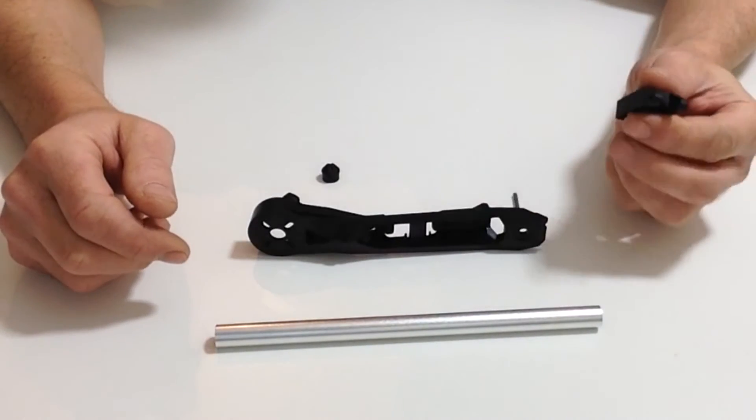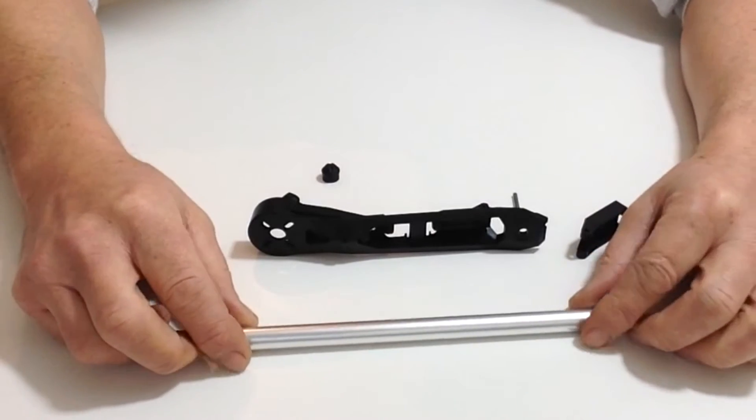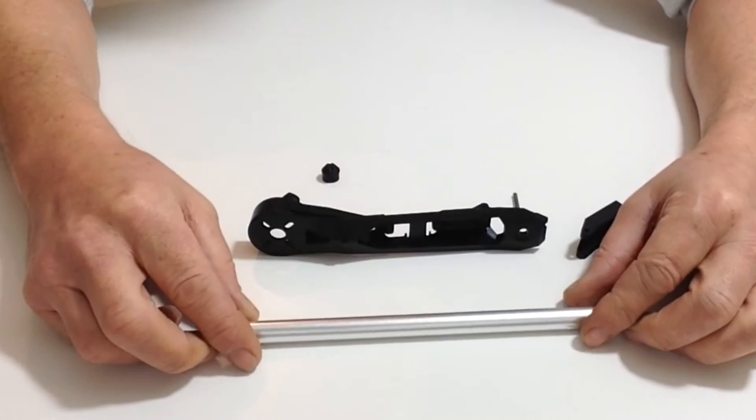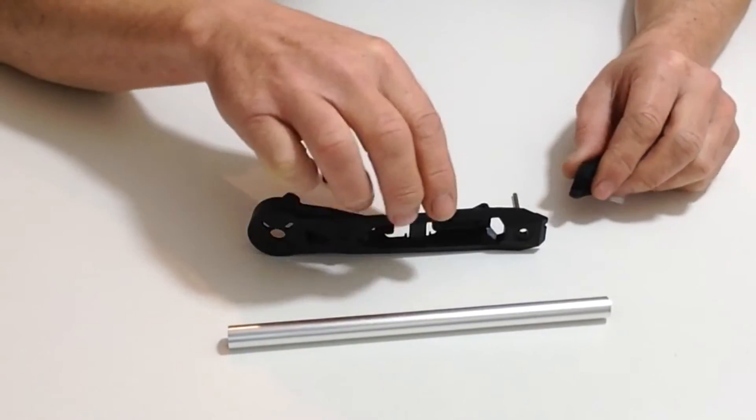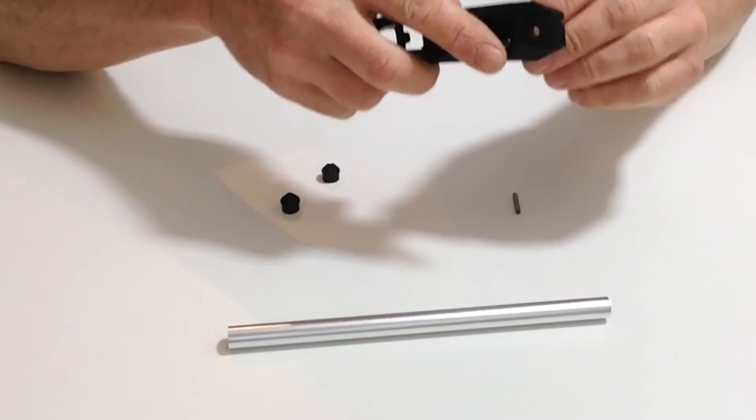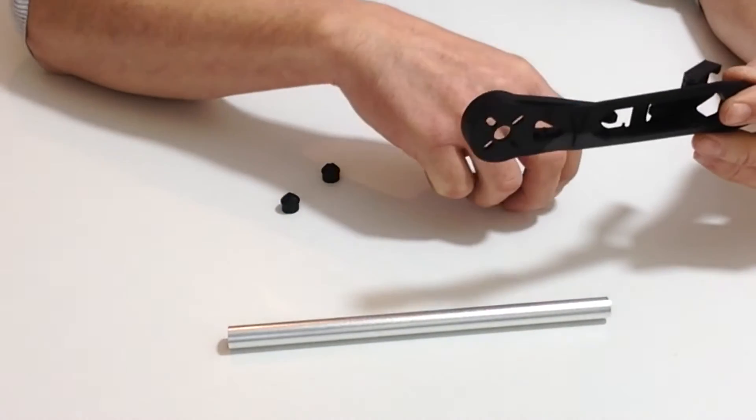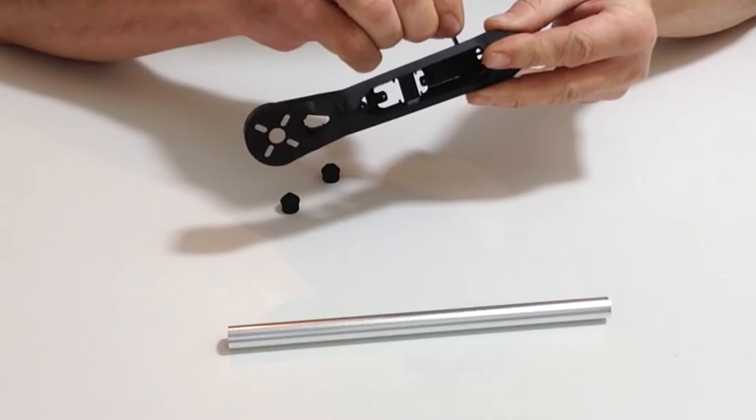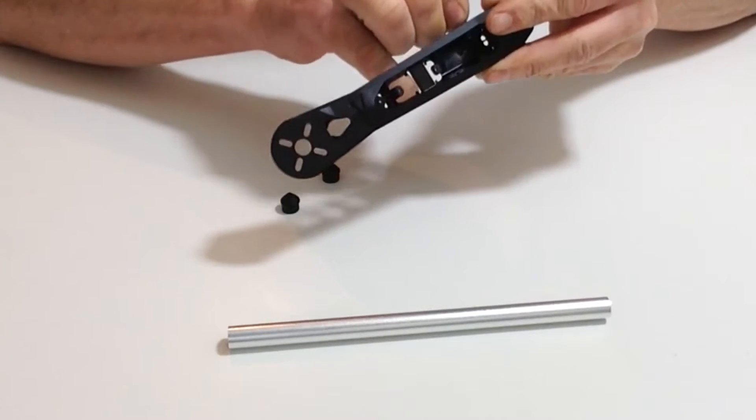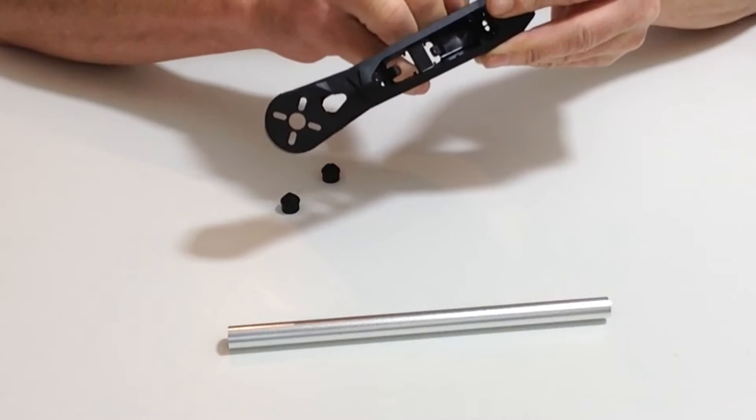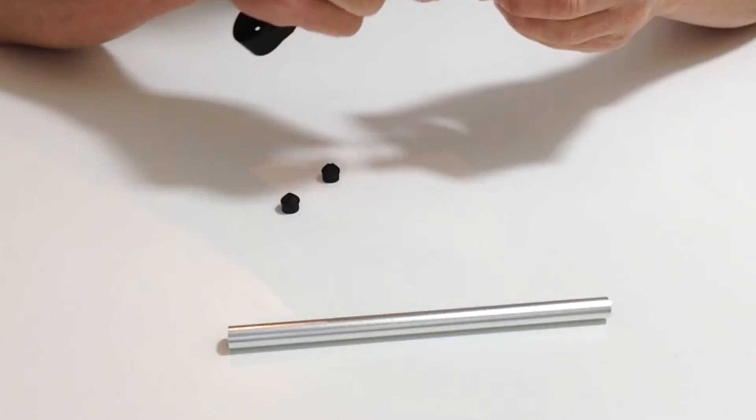In stage 3, we're going to be fitting one of the rotor arm hinges and putting the ends onto the aluminum tube that was supplied. Take one of your hinge arms and the pin, then place the pin down through the hinge arm, pressing it down.